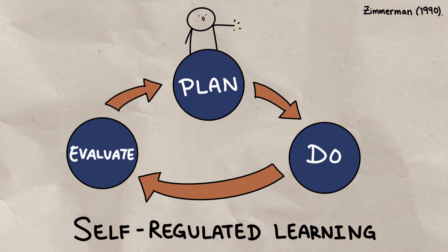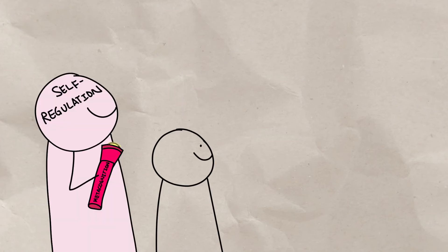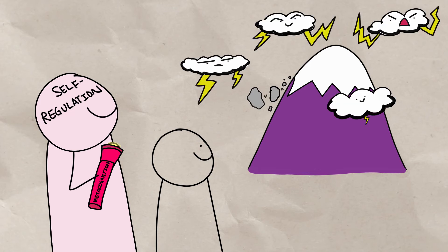So without metacognition, learners, unaware of their thought process, cannot self-regulate. So how can you exercise your metacognition and self-regulate when you encounter your next challenge?